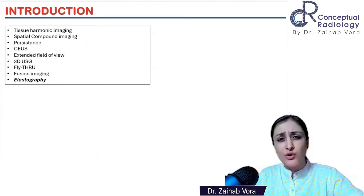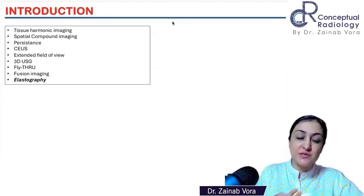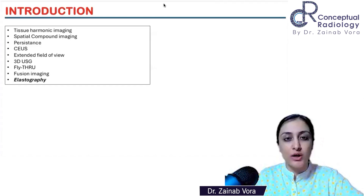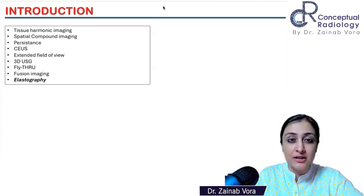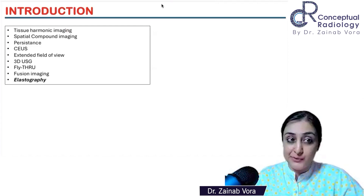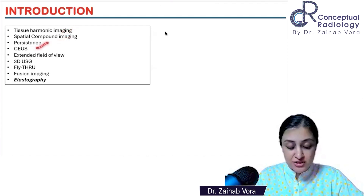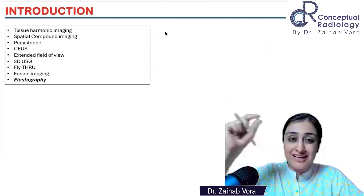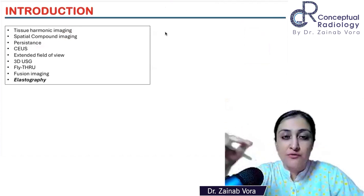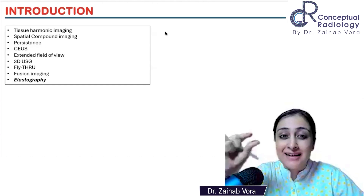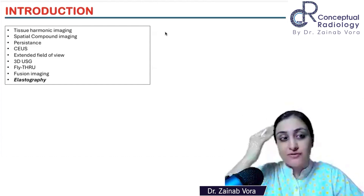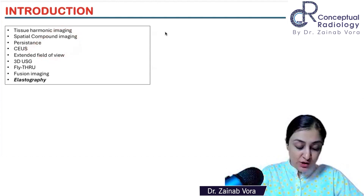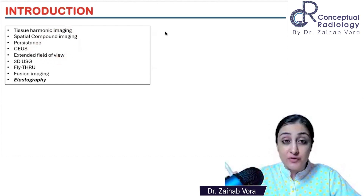We are going to be talking about all of these. All of you must be aware of THI and spatial compounding, because this is something we use in day-to-day ultrasound imaging — when you want a better image, less clutter, less speckle, you want to use THI and spatial compounding. Persistence is something you'll find on your ultrasound screen, usually in the top right corner — it's either low, medium, or high. We'll talk about the physics behind it, as it's related to harmonic imaging.